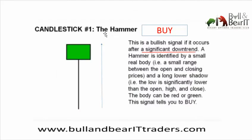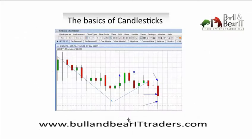The first pattern is called a hammer. A hammer is always used on a downtrend — when the market is moving down. After the downtrend, if you see a hammer, it always means the market is about to go up. So a hammer indicates a trend change. Looking at the chart, you can see the market moved down, then a hammer appeared and the market started moving up. This is a perfect hammer which shows you that the trend is going to change.